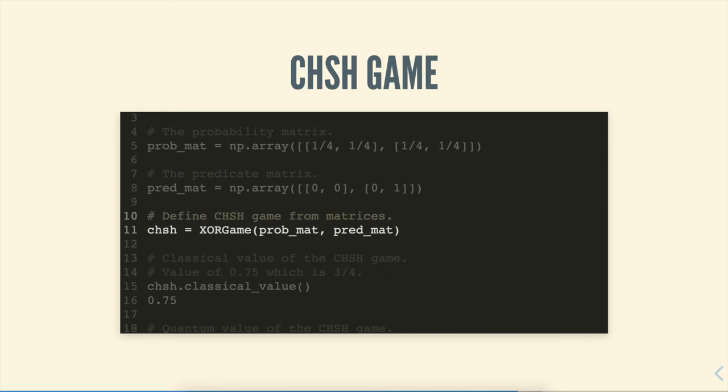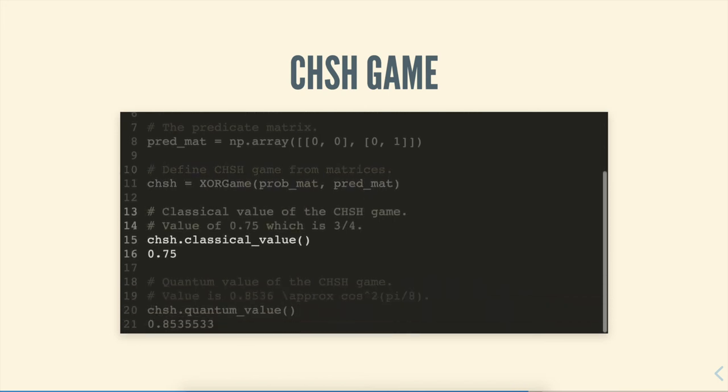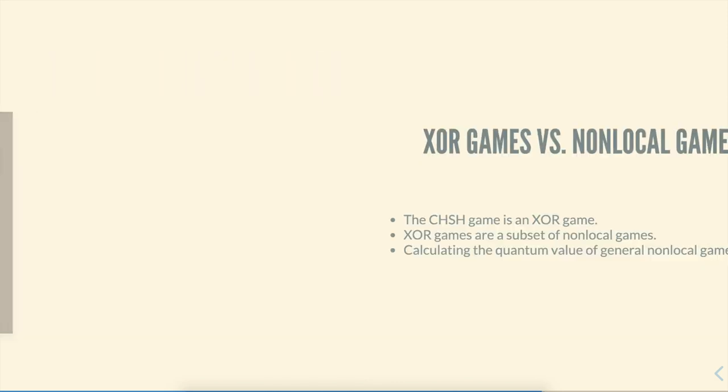And we'll do that using Toqito directly. So one of the built-in functions that this object now has is classical value. And this gives us the optimal winning probability that Alice and Bob have if they invoke a classical strategy for this particular XOR game. We can see in the case of CHSH, the best that they can do if they use a classical strategy is winning with a probability of three-fourths. Alternatively, if they make use of a quantum strategy, they can actually win with a strictly higher probability. That is, they can win with a probability of cosine squared pi over eight, or a little bit more than 85%.